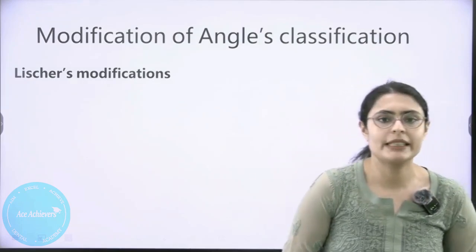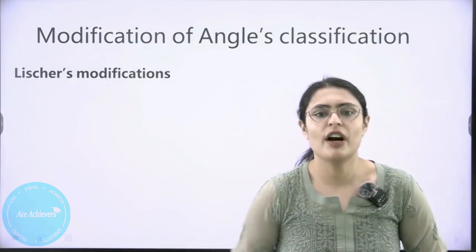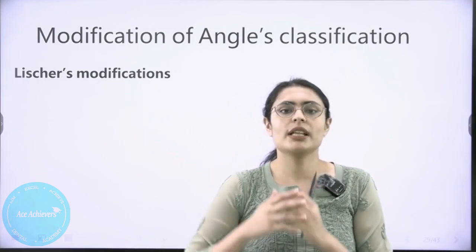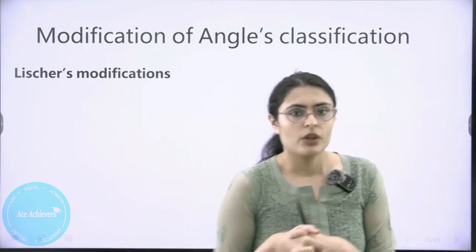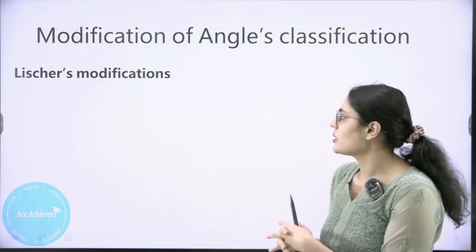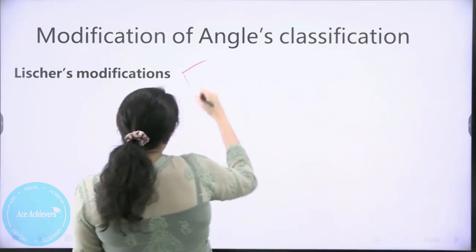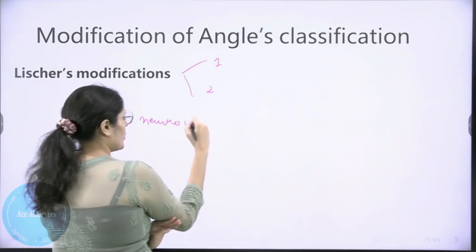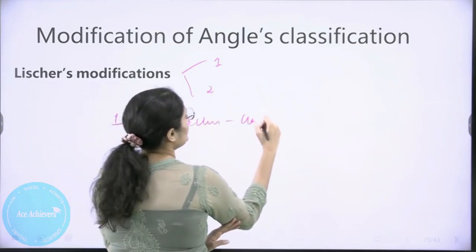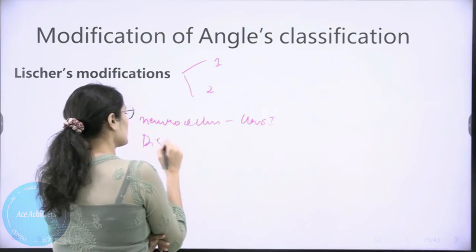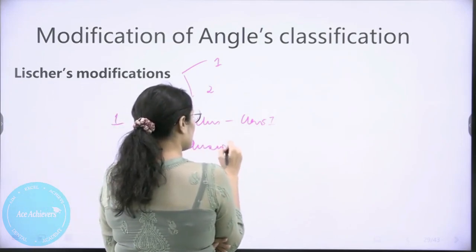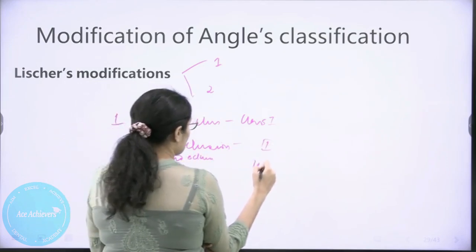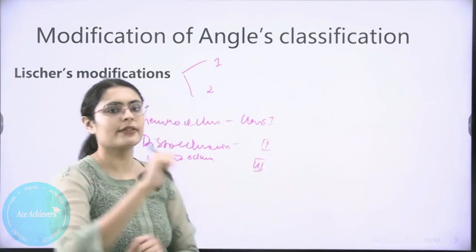Now we come to modification. A lot of people quickly realized that Angle's classification of malocclusion was far from perfect — malocclusion has various manifestations and features that Angle did not take into account. So others developed their own classifications. The first was Lister, who gave two modifications. He renamed the classes: Class 1 is neutral occlusion, Class 2 is disto-occlusion, and Class 3 is mesio-occlusion.